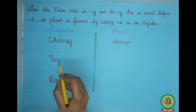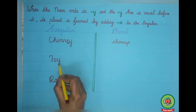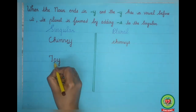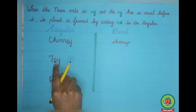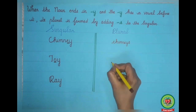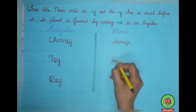Next example is toy. The singular noun ends with Y but before Y, the letter O is there — and O is a vowel. So we will make it plural by simply adding S to the singular noun. The plural noun will be toys.